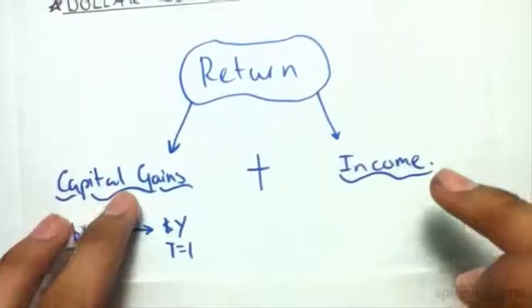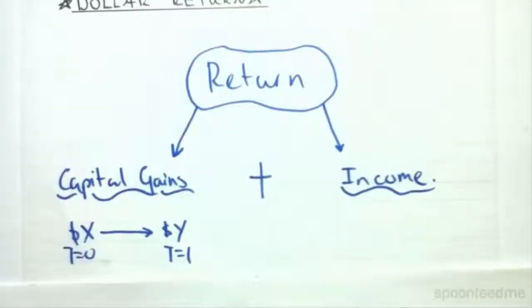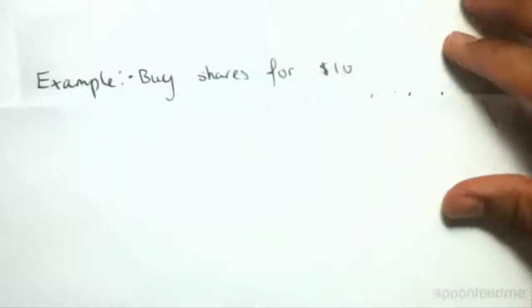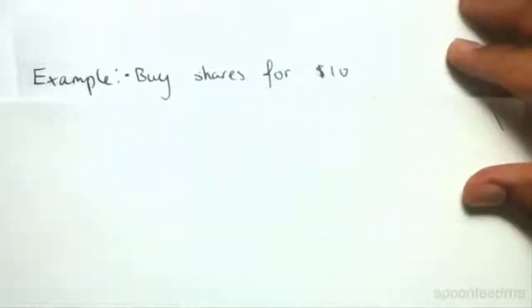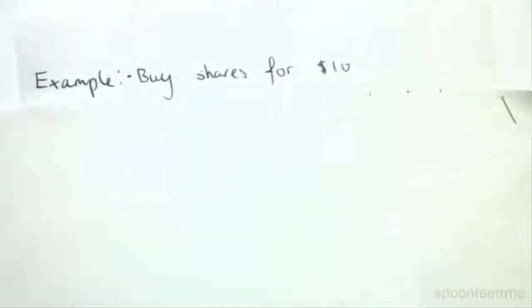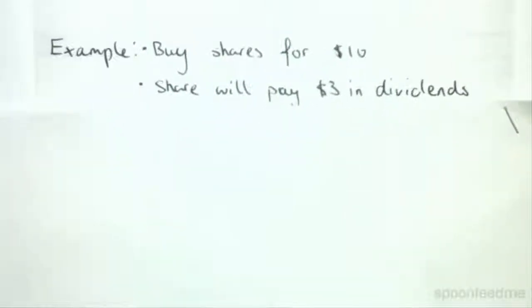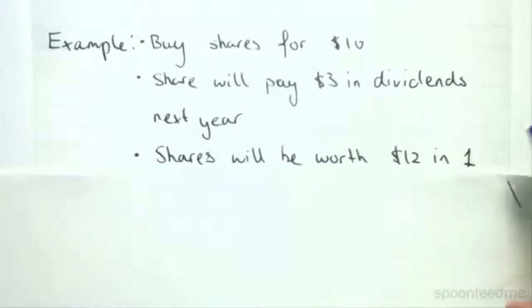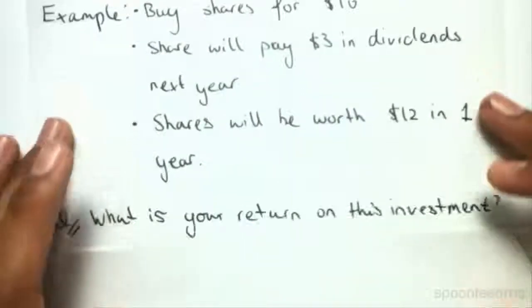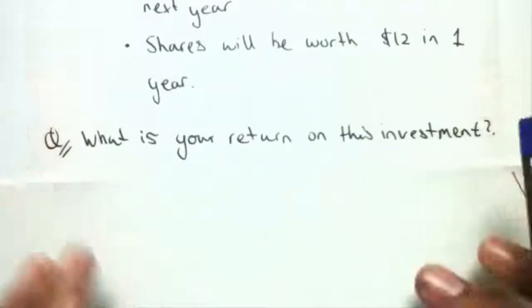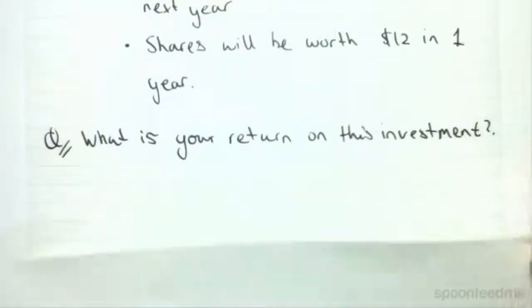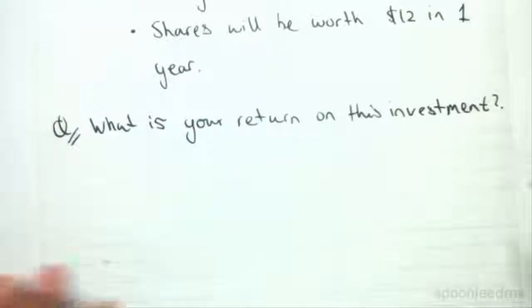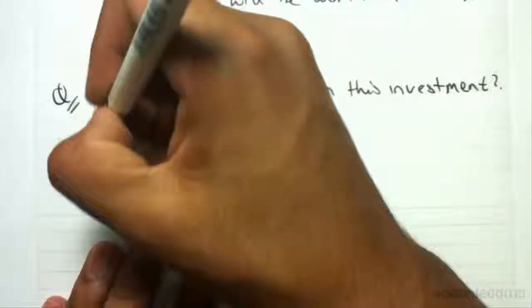Let's do an example. The example here says: I'm going to buy shares for $10, and the share will pay $3 in dividends next year. Shares will be worth $12 in one year. What is your return on this investment? Let's start off by writing what our return should be equal to.